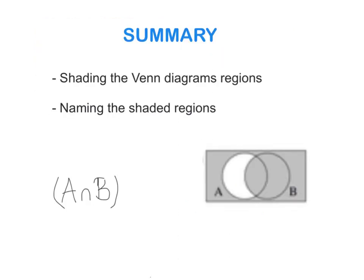After watching this video you should be able to shade Venn diagram regions and name the shaded region. For homework, try to shade (A intersection B) complement, and try to name this shaded region using the symbols you've met so far. See you tomorrow!